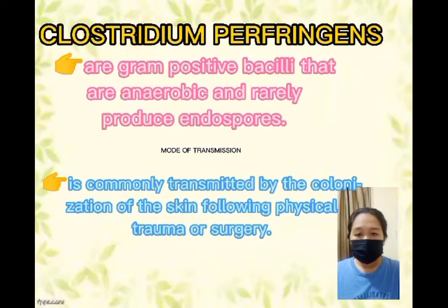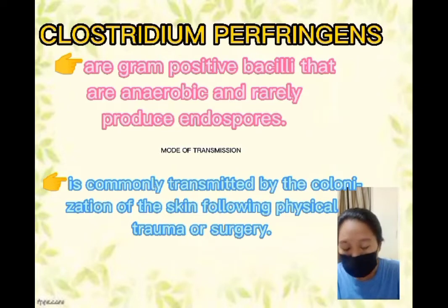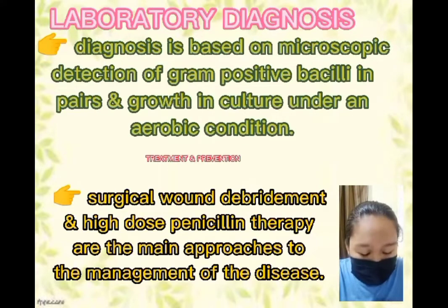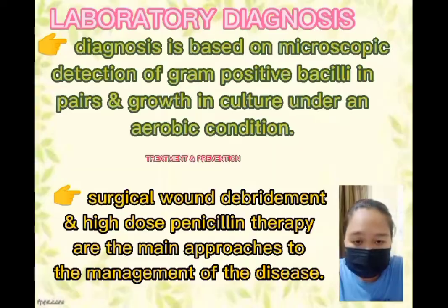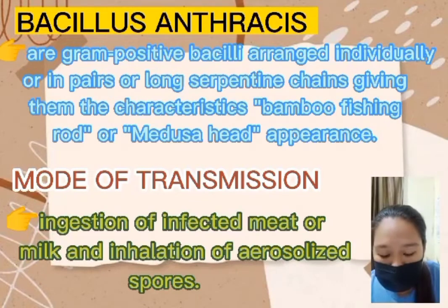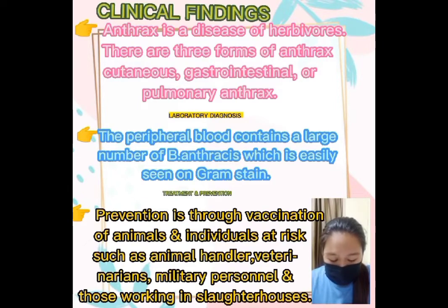Good day, I'm Princess Diane. Clostridium perfringens are gram-positive, anaerobic bacilli that rarely produce endospores. Transmission is commonly through colonization of the skin following physical trauma or surgery. Diagnosis is based on microscopic detection of gram-positive bacilli and growth in culture under anaerobic conditions. Treatment includes surgical wound debridement and high-dose penicillin therapy. Bacillus anthracis are gram-positive bacilli arranged individually, in pairs, or in long serpentine chains, giving a characteristic bamboo, fishing rod, or medusa head appearance. Transmission occurs via ingestion of infected meat or milk and inhalation of aerosolized spores. Anthrax is a disease of herbivores with three forms: cutaneous, gastrointestinal, and pulmonary. Diagnosis is made by gram stain of peripheral blood showing large numbers of bacilli.